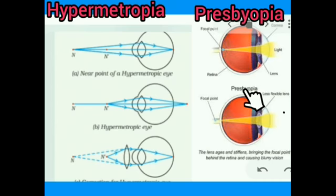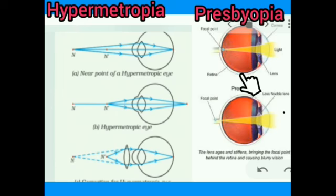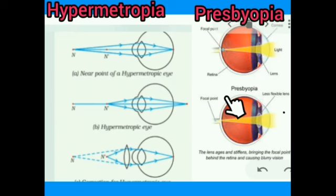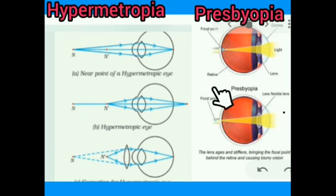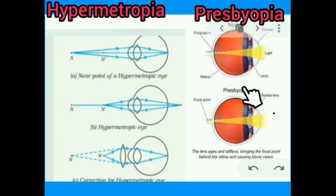The next topic is presbyopia. Presbyopia is also a type of hypermetropia — the person is not able to see near objects clearly. Actually, this is not a defect as such; it happens in every person due to aging. The lens ages and stiffens, bringing the focal point behind the retina and causing blurry vision. The ray diagram is the same as for hypermetropia, and we use a convex lens of suitable focal length to rectify this problem. Sometimes a person suffers from both myopia and hypermetropia, in which case they have to wear bifocal lenses, which are a combination of a convex lens and a concave lens.